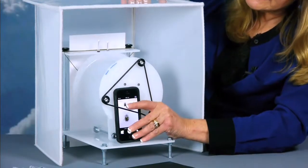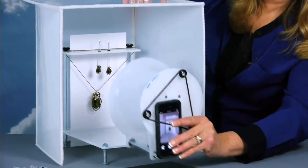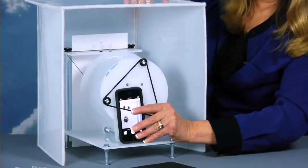You can also use the Nimbus dome on the cradle to shoot straight on for larger objects like necklaces on a bust.